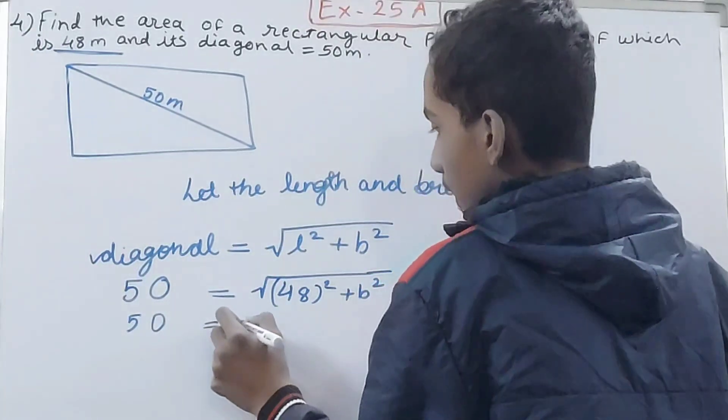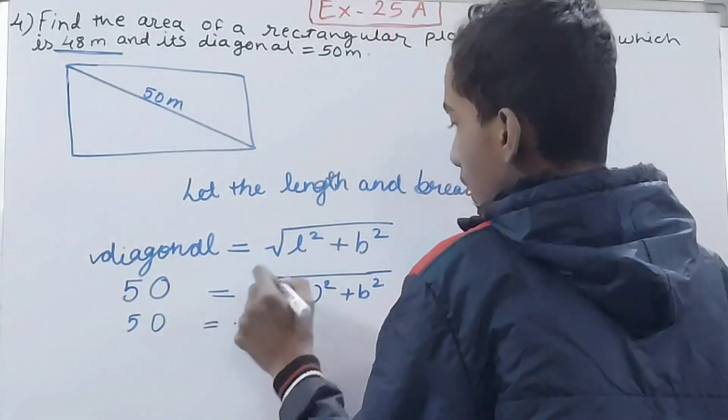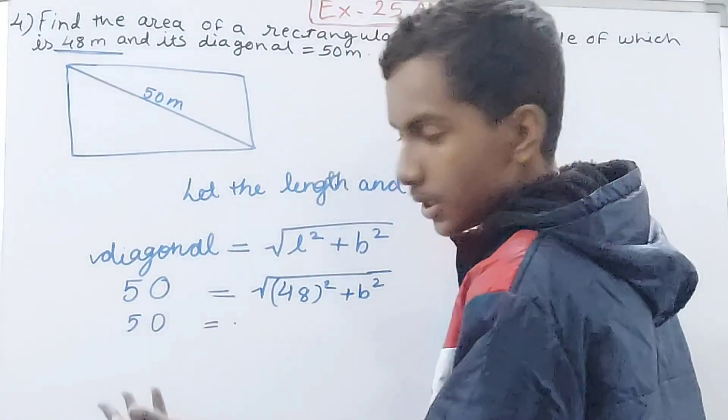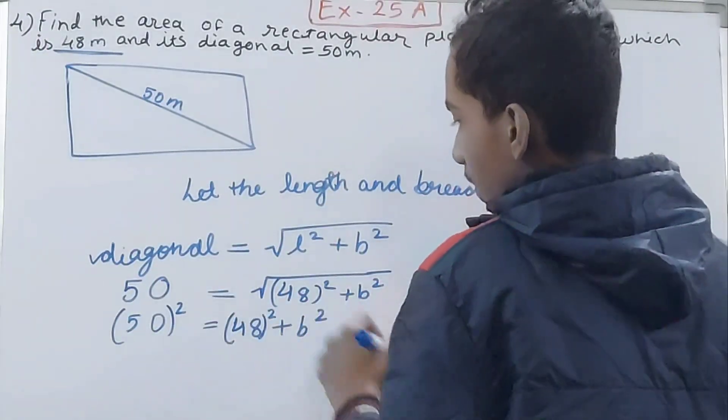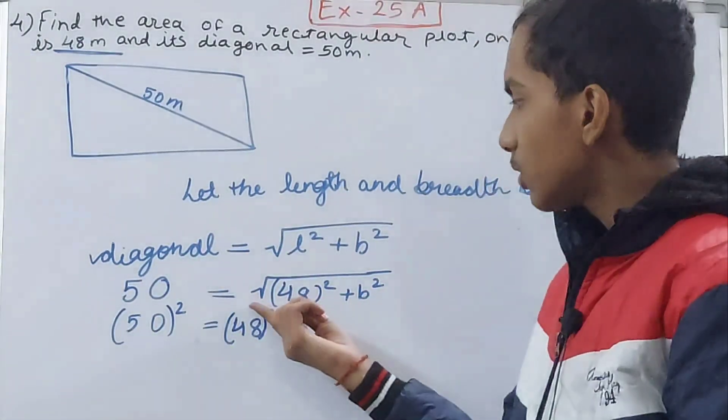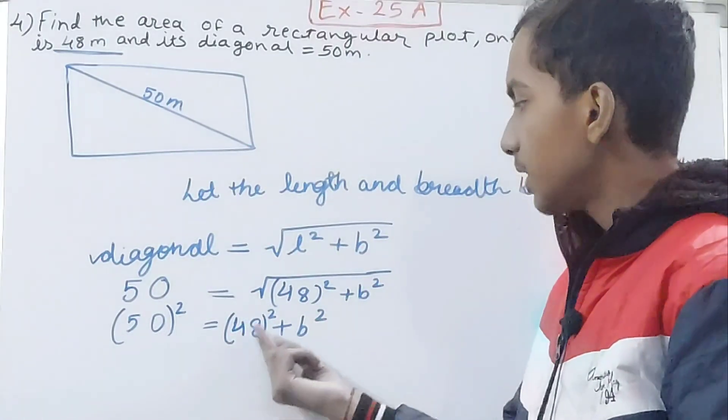So 50 is equal to, now we will have over here, remove the under root sign and this also will get squared. So after opening the brackets you can see this under root sign will be removed, 48² and b² will be there as it is.